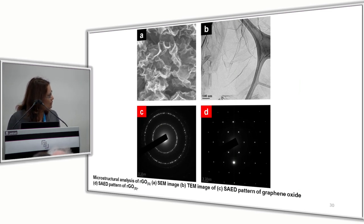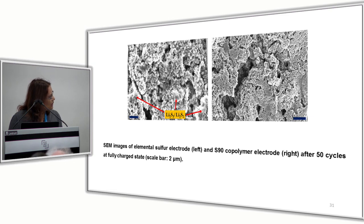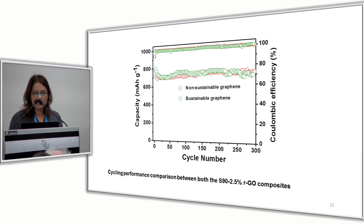From the SAED pattern, graphene oxide is a diffuse ring, but you develop this hexagonal pattern in case of RGO, which signifies its reduction. These are SEM images of elemental sulfur electrode and S90 copolymer electrode. After 50 cycles, they opened it up and there's lots of lithium sulfide deposition onto the sulfur electrode. This is proof of concept that the copolymer is preventing deposition of lithium sulfide salts. We compared non-sustainable versus sustainable graphene route. These copolymers do similarly well compared to non-sustainable graphene. Hydrazine is bad for scale-up reactions, but gallic acid-mediated reduction does the key.